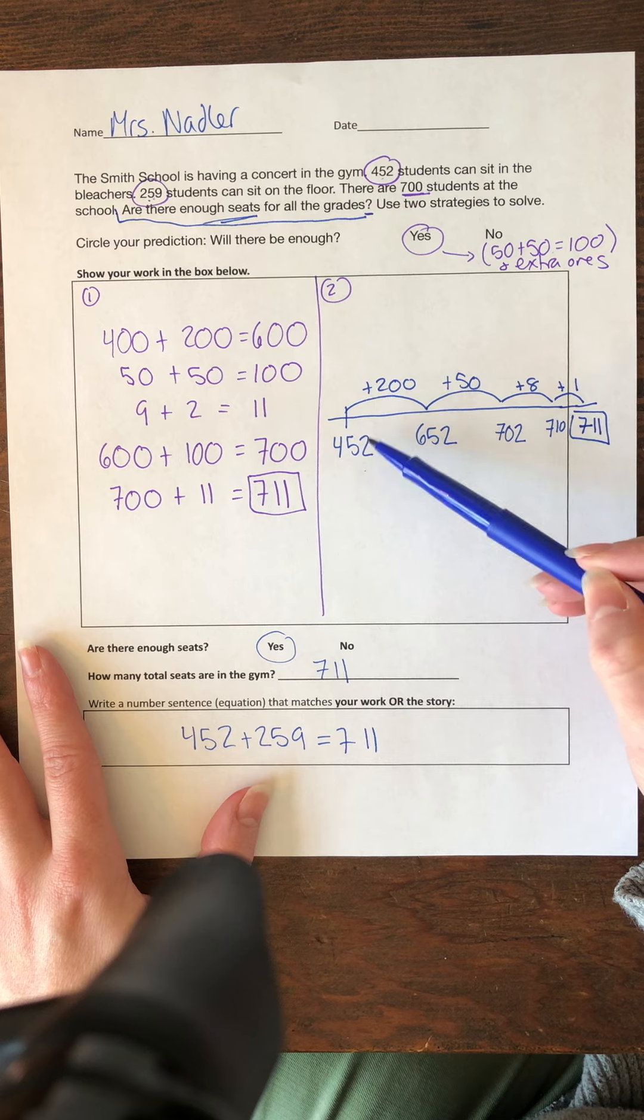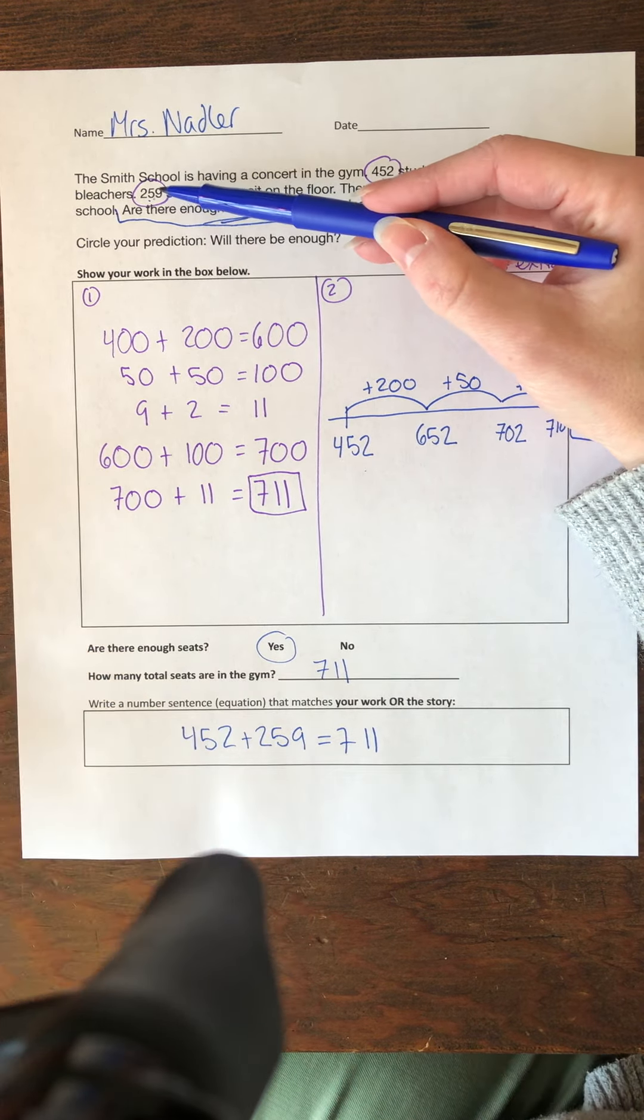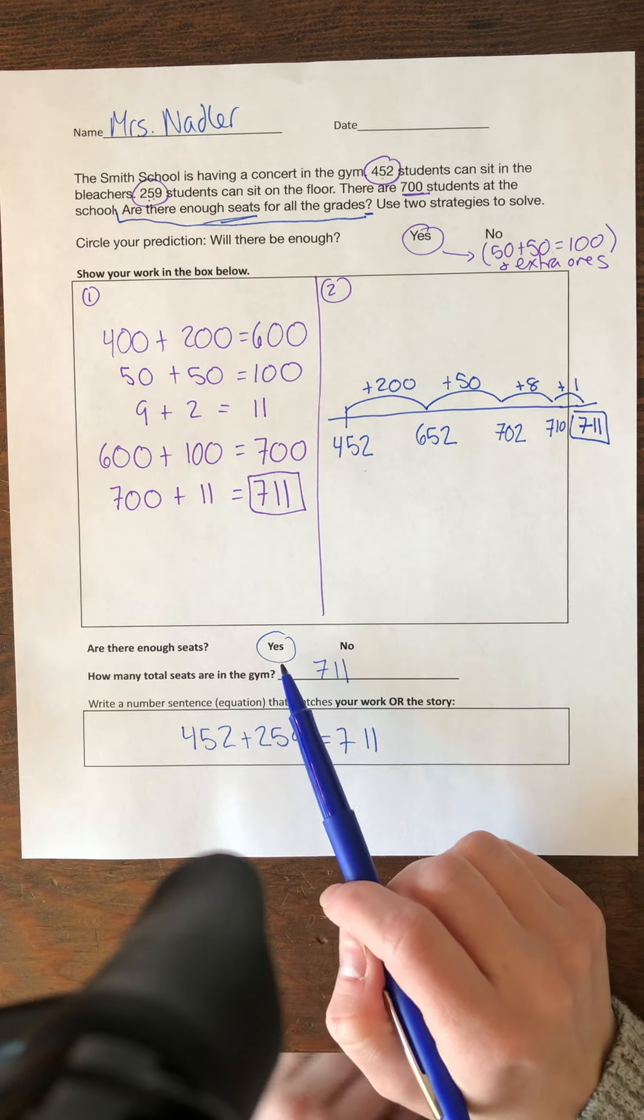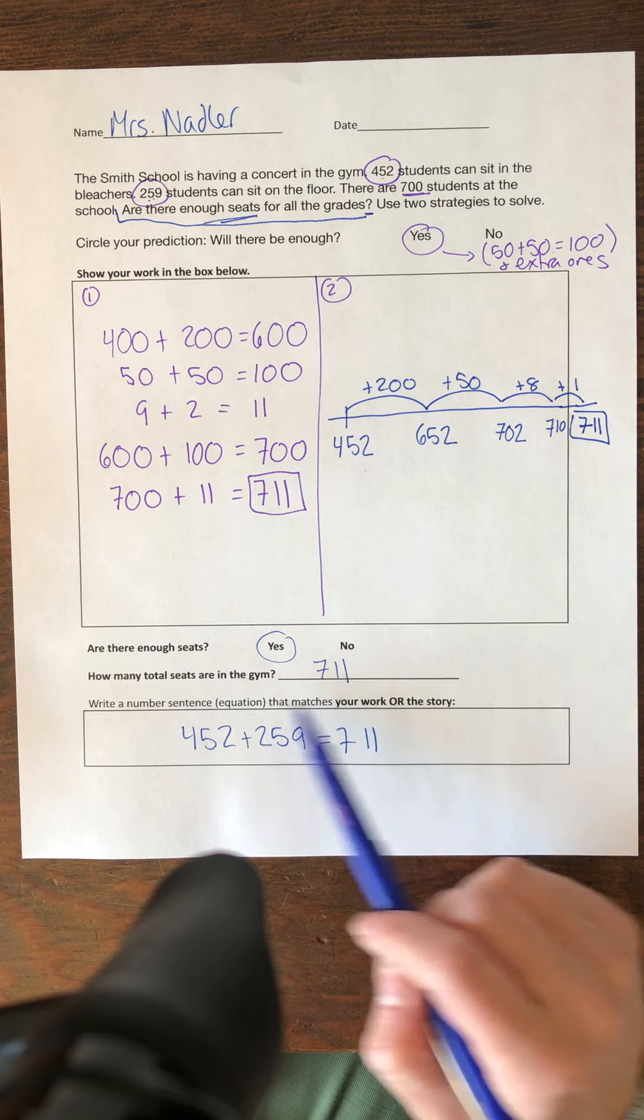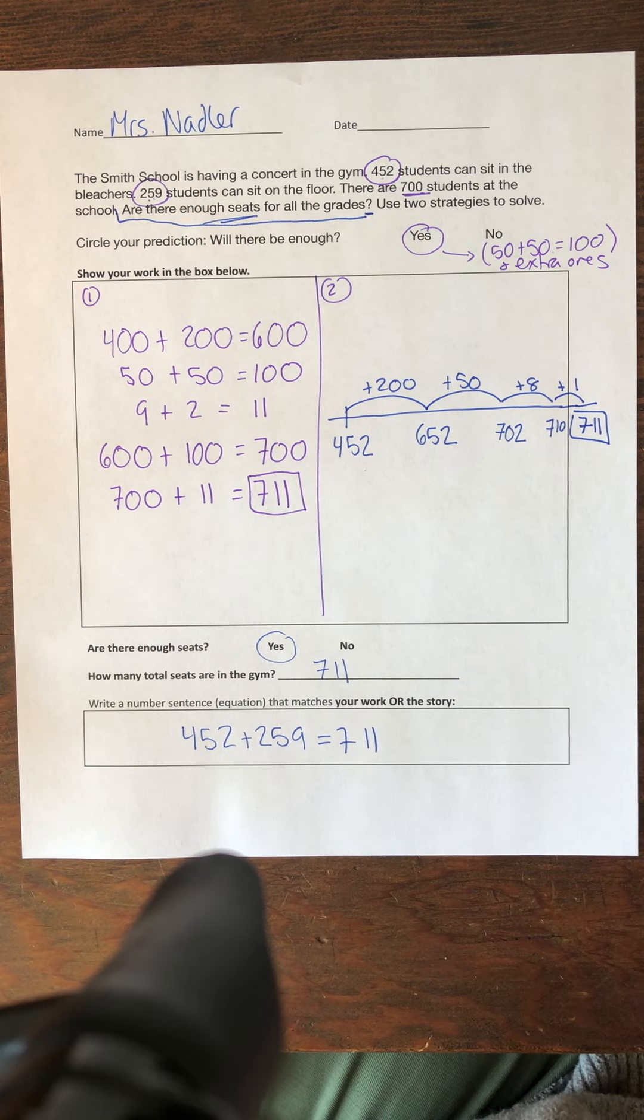I might have actually, when I thought back, maybe taken this nine apart and decompose that a little more to make that into a friendlier number. So I circled here. Yes, there are enough seats. There are a total of 711 seats. And here is my number sentence.